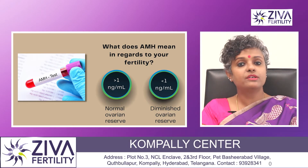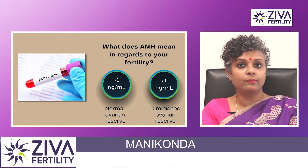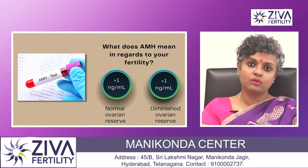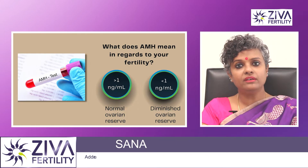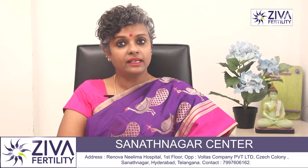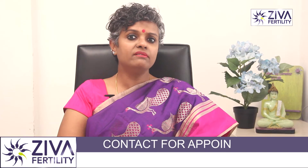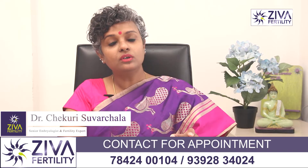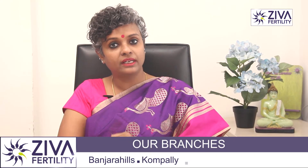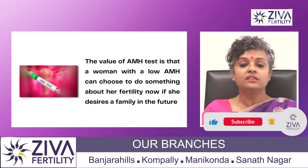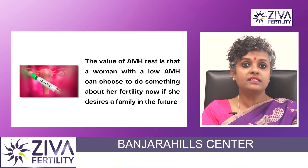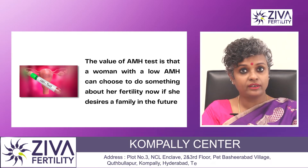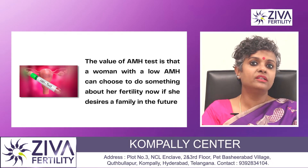Lower numbers, especially those below 1 nanogram per ml, may indicate a woman with diminished ovarian reserve, also called poor ovarian insufficiency. We know that a woman's fertility declines as she ages, so typically when we see an AMH value at an advanced age, we also expect the ovarian reserve to decline. The value of this test is that a woman with low AMH can choose to do something about her fertility at that particular time, or if she desires a family in the future.